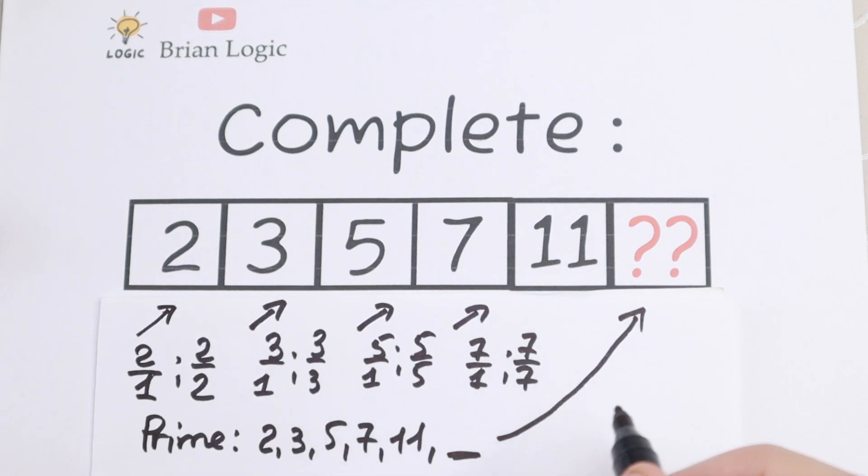After 11 we will have 12. 12 is not good because 12 can be divided by 1, by 2, by 3, by 4. So this is not a prime number. What is the next number? The next number is 13.